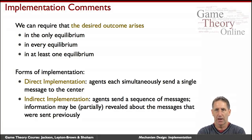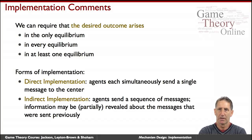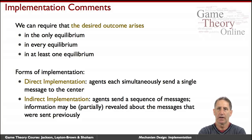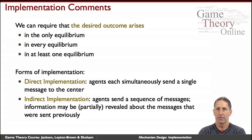Finally, there are various ways to implement a function. An important distinction is between direct and indirect implementation. In a direct implementation, agents send essentially a single message to the mechanism designer — the center — disclosing what they need to disclose about their type, and then the rest happens within the mechanism. In a voting example, you could simply disclose once and for all your entire preference profile — say, I prefer A to C to B — or if the mechanism calls for only disclosing a top choice, simply declare that. That's a direct mechanism.